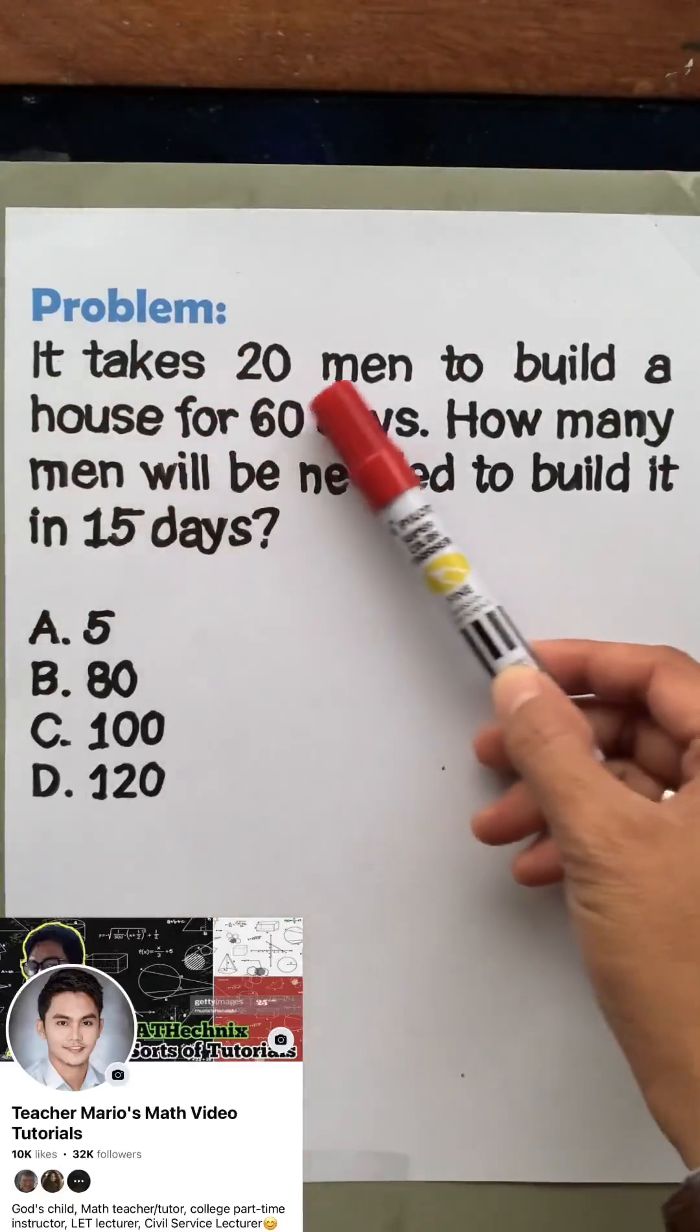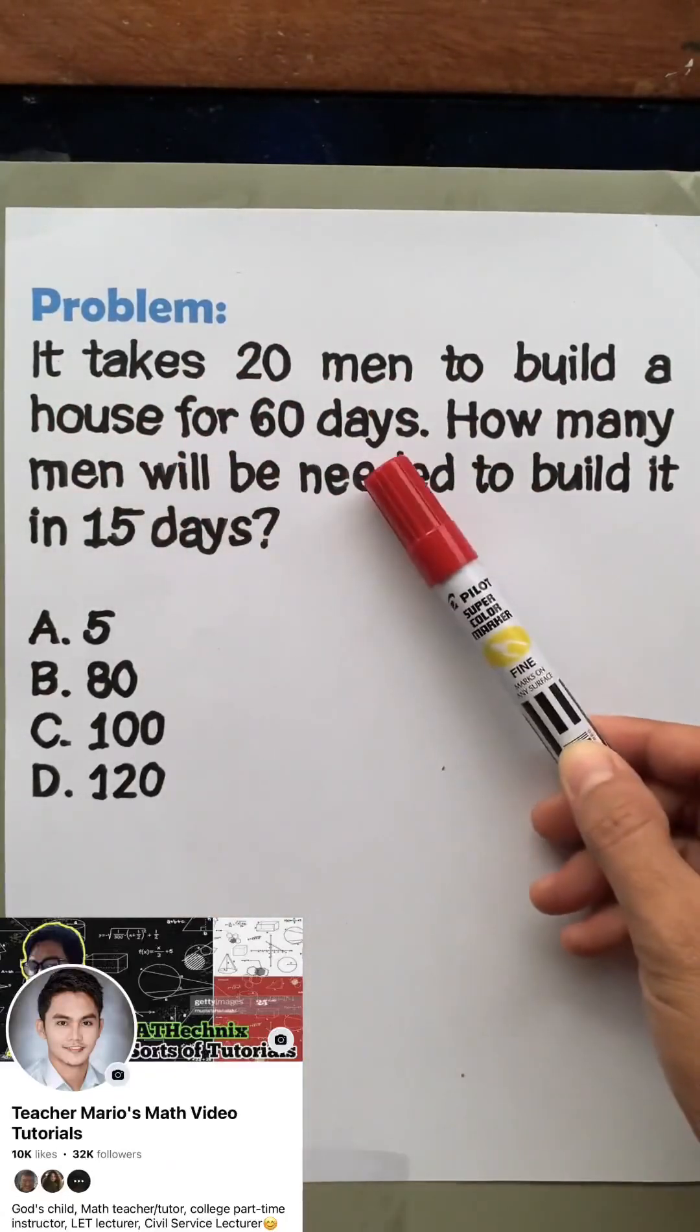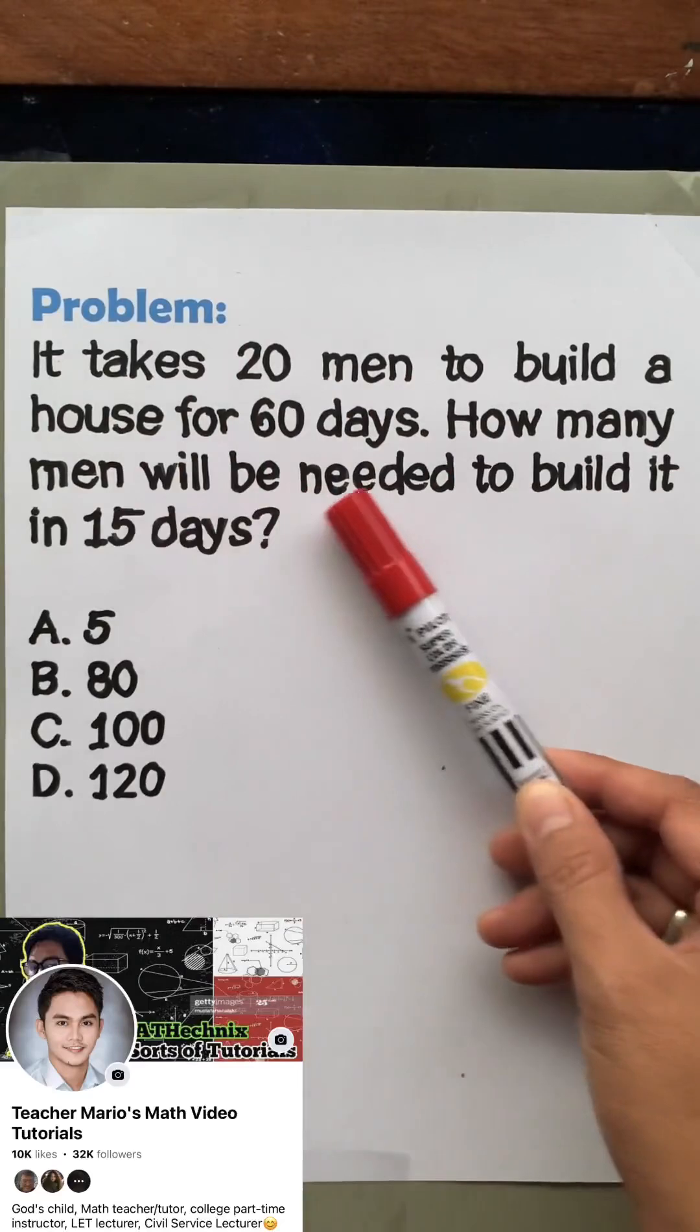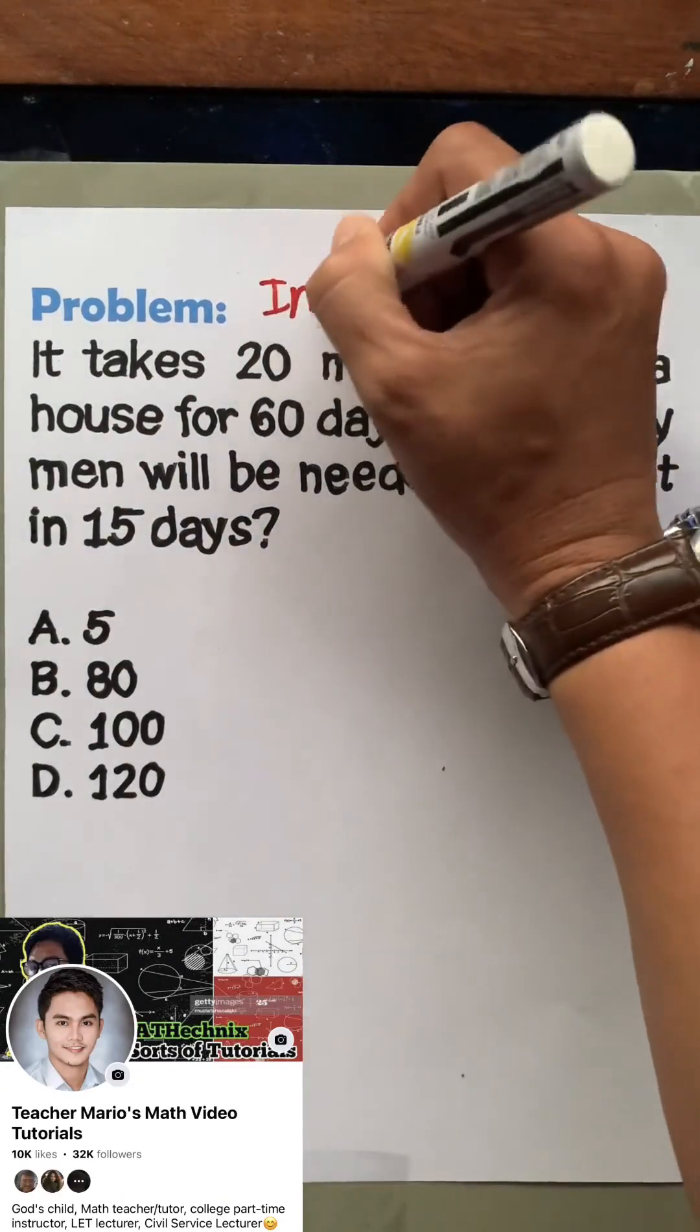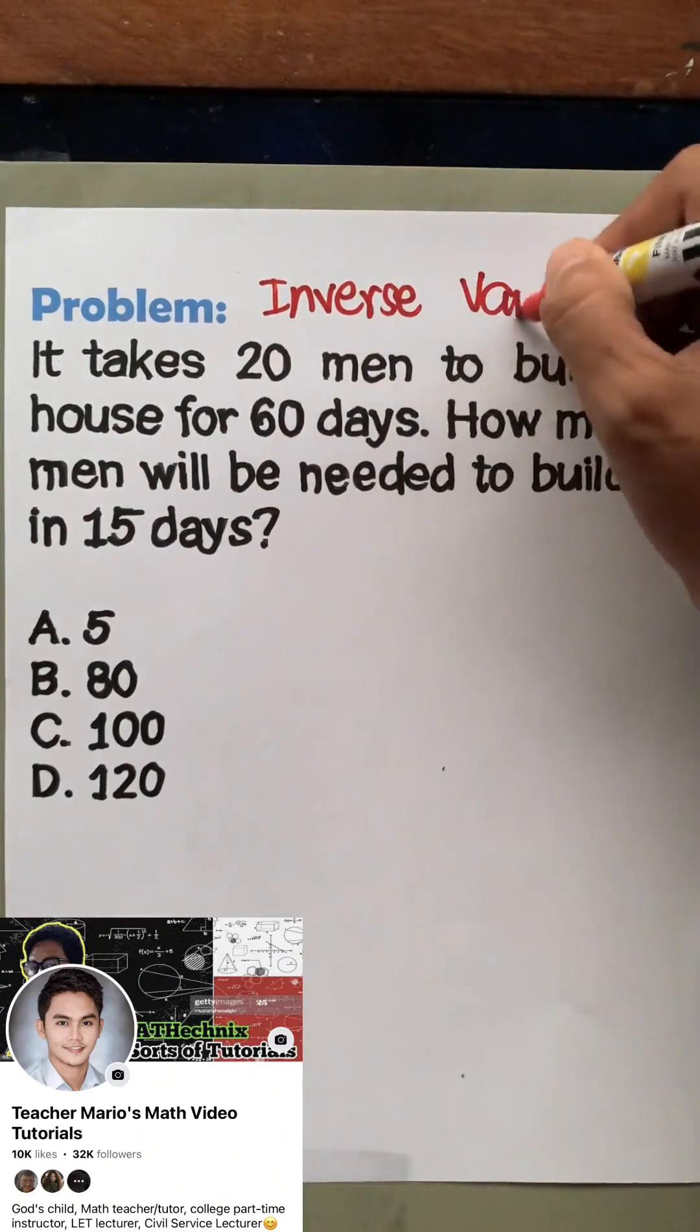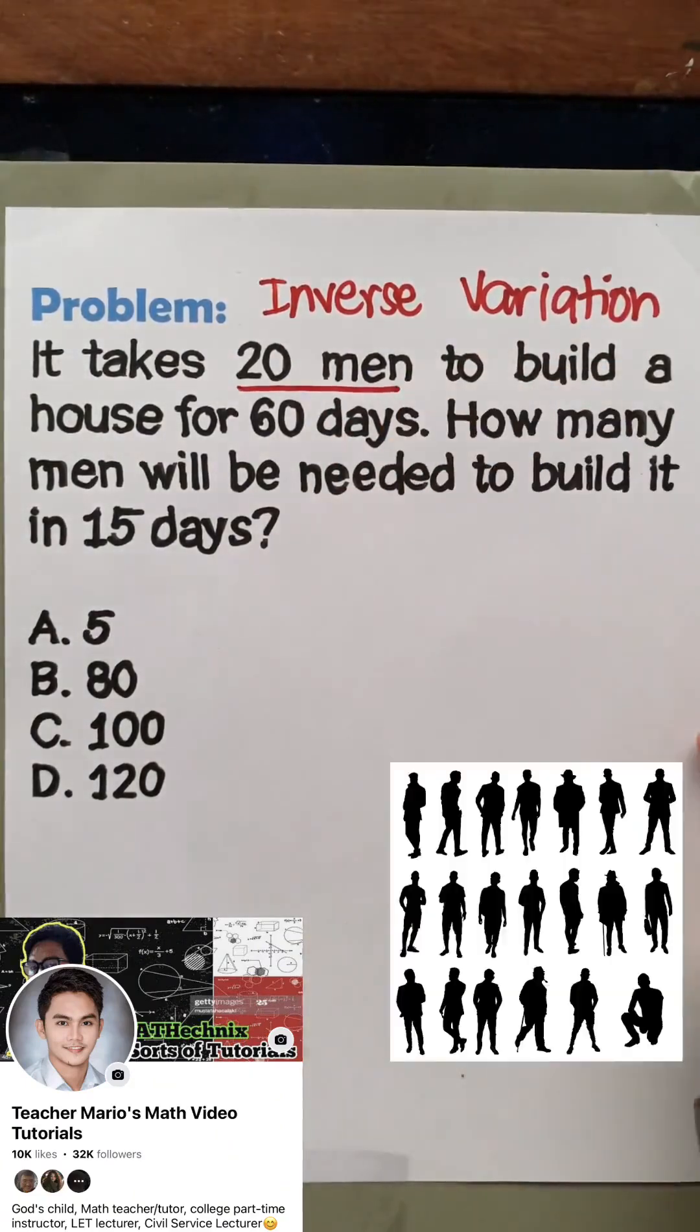Problem: It takes 20 men to build a house for 60 days. How many men will be needed to build it in 15 days? This is an example of an inverse variation or inverse proportion. We have 20 men...